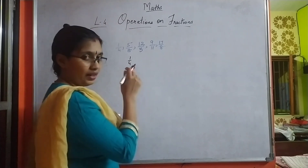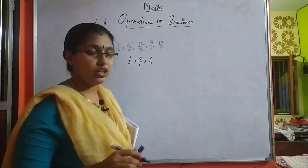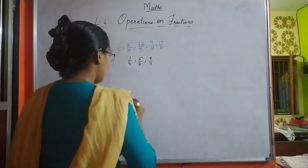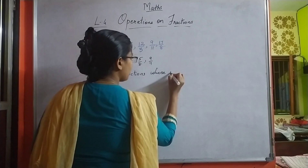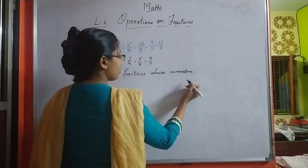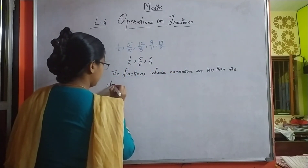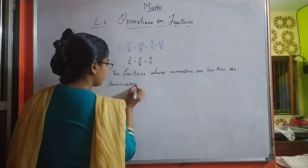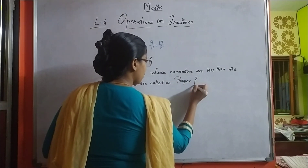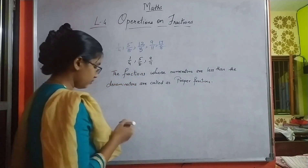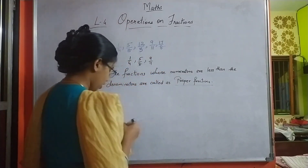Let me write it below. 1 upon 4: 1 is less than 4. Next, 5 upon 8: 5 is less than 8. Next, 9 upon 11: 9 is less than 11. So here all the numerators are less than the denominators. The fractions whose numerator is less than the denominator are called proper fractions.